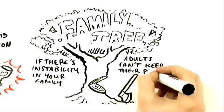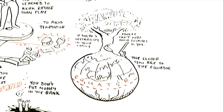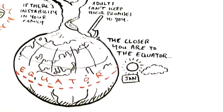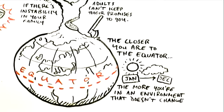The closer you are to the equator, the more present-oriented you are. The more you're in an environment where climate doesn't change, it gives you a set of imagining sameness rather than change.